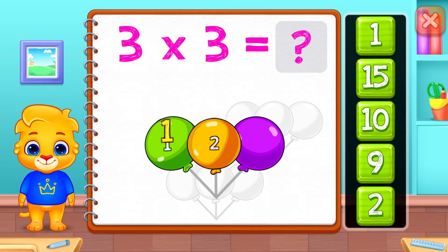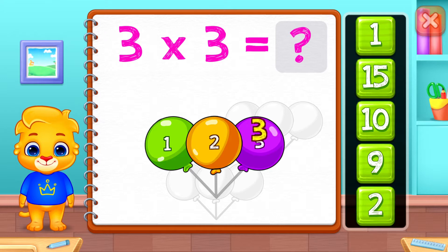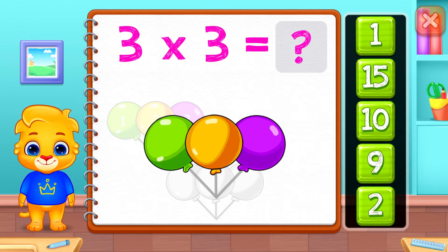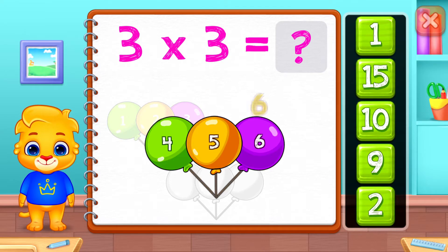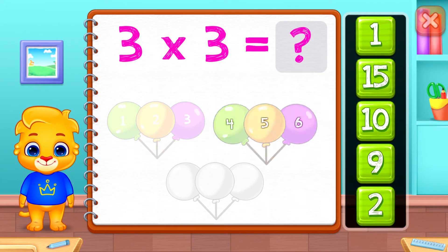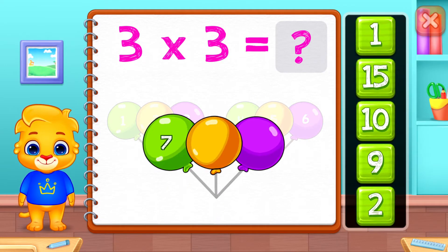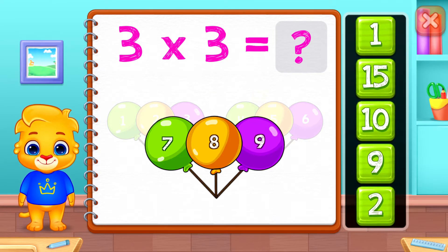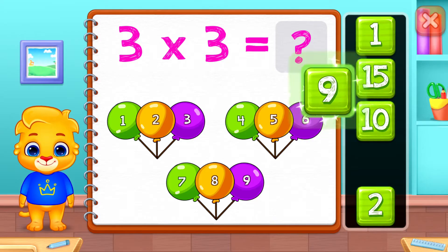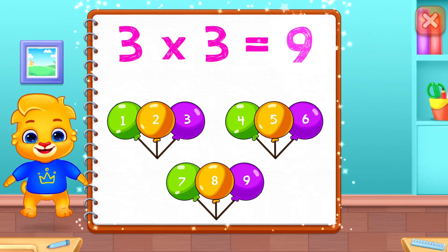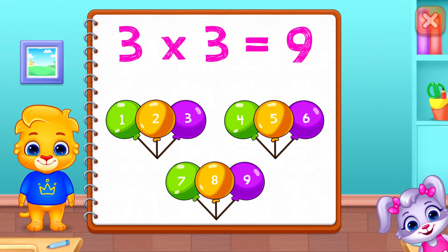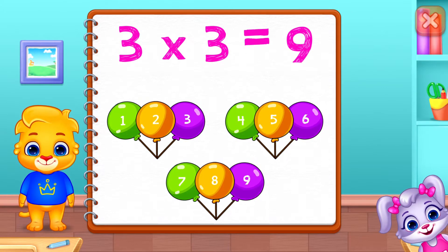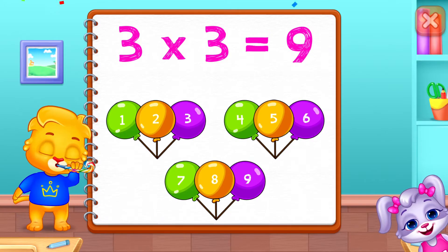1, 2, 3. 1, 2, 3. 4, 5, 6. 7, 8, 9. 3 times 3 equals...